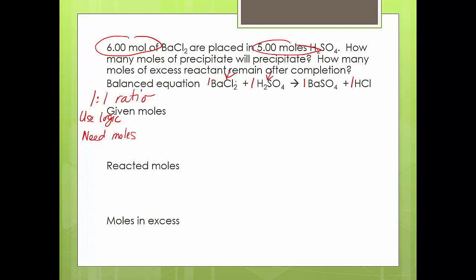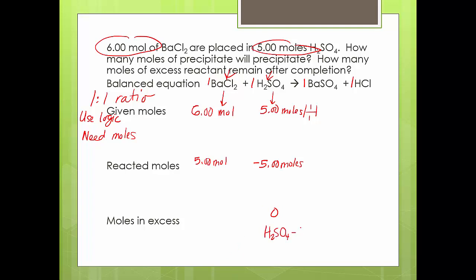So this is saying one-to-one — I need equal amounts. I have six moles of barium chloride and five moles of sulfuric acid. Since I need equal amounts, five moles of sulfuric acid is going to get used up — you're going to react all five moles. Five moles will be used up because it's a one-to-one ratio. You'll have no excess sulfuric acid. That's how I know your sulfuric acid is the limiting reactant, because you ran out of it first. How much is in excess? I have how much I began with minus how much was used up.